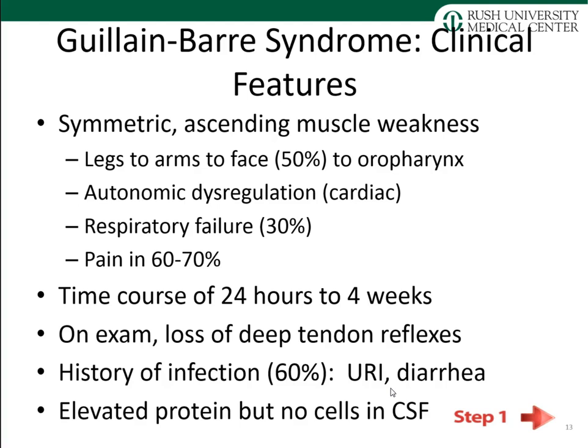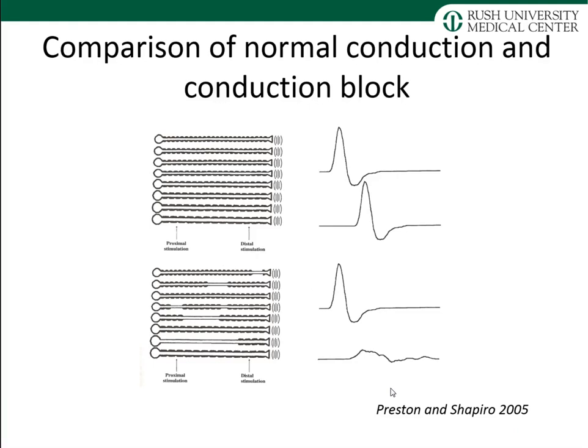With a spinal tap, we see elevated protein in the cerebrospinal fluid but no inflammatory cells. On nerve conduction study, a normal individual shows normal conduction when the nerve is stimulated; in Guillain-Barré, stimulation produces no normal response — essentially a conduction block — because of myelin destruction.